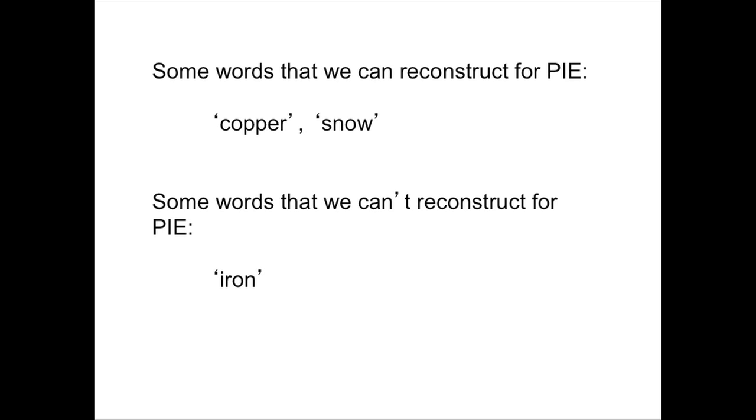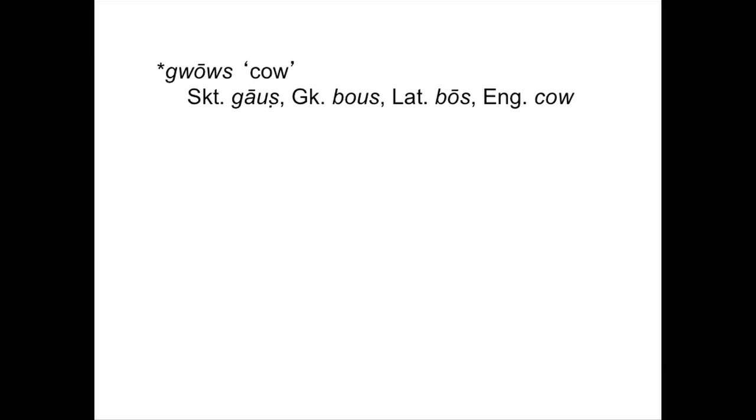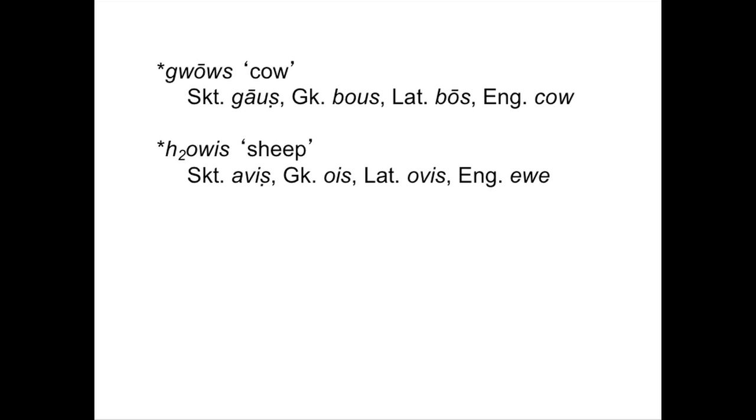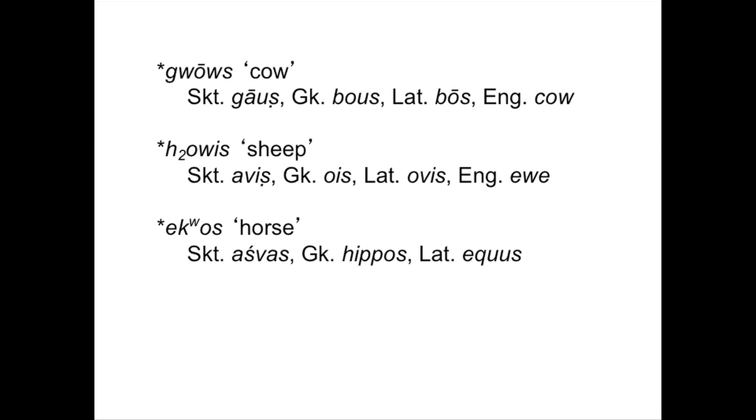That puts them at a certain location in time. How about location in space? They had a word for snow, so they probably didn't live in Singapore. And they don't have a word for palm tree, so they weren't in a tropical area — snow but no palm trees. They had a word for goose but no word for chicken. Chickens were originally domesticated in Southeast Asia and didn't make their way west to Greek and Roman culture until probably the early first millennium BC, so the Proto-Indo-Europeans lived somewhere chickens had not yet been introduced.